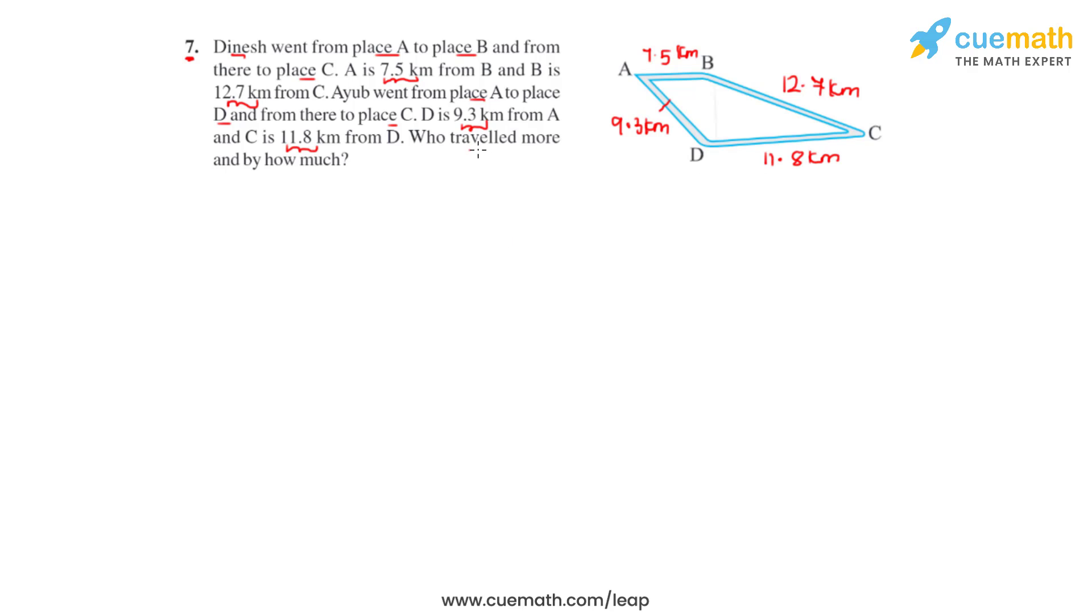Now we have to find who traveled more and by how much. So for that we'll first find out what is the total distance which is traveled by Dinesh. So we'll write it as a sum of AB and BC. We'll substitute the values for both of these. So that is 7.5 plus 12.7 kilometers.